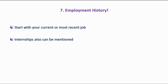Number seven: your employment history. When specifying your employment history, make sure you start with your current or most recent job — the same top-to-bottom approach, in descending order. You say what you are doing now, then what you did before, then what you did even before that. You can mention all jobs including voluntary jobs and internships, as these are added advantages — your future employer will clearly understand what areas you have experience in already.